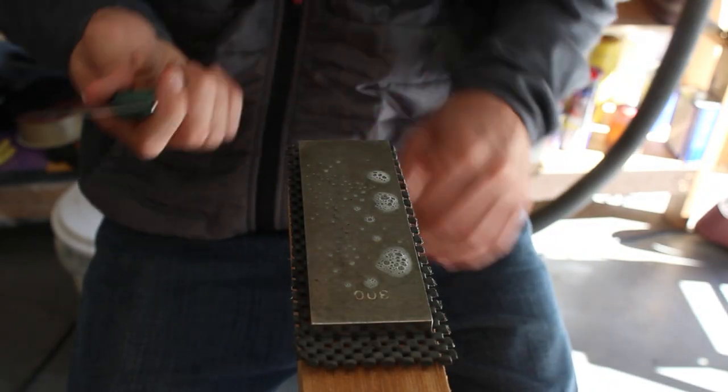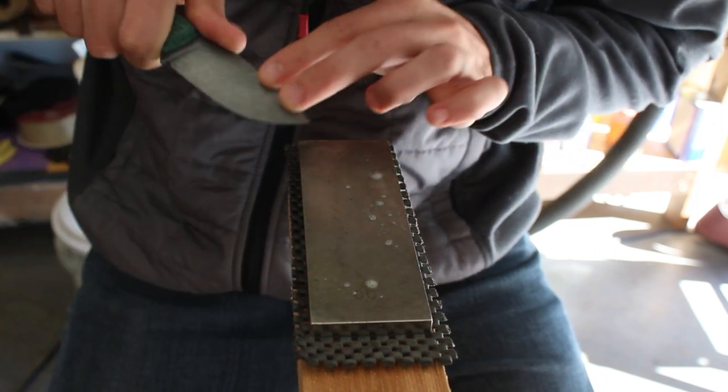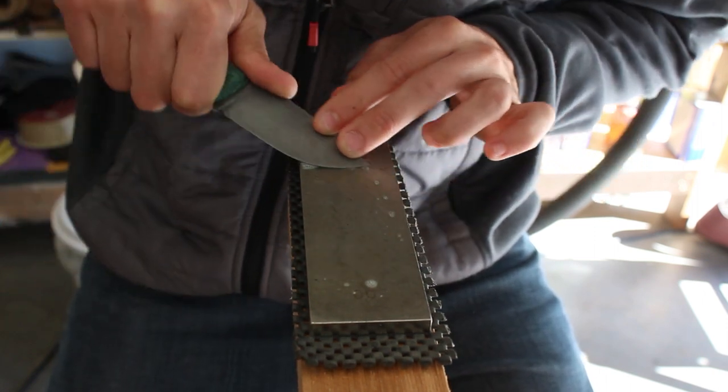To sharpen the knife I will rough in the secondary bevels with a 300 grit, polish it up with a thousand grit, and then strop the knife.